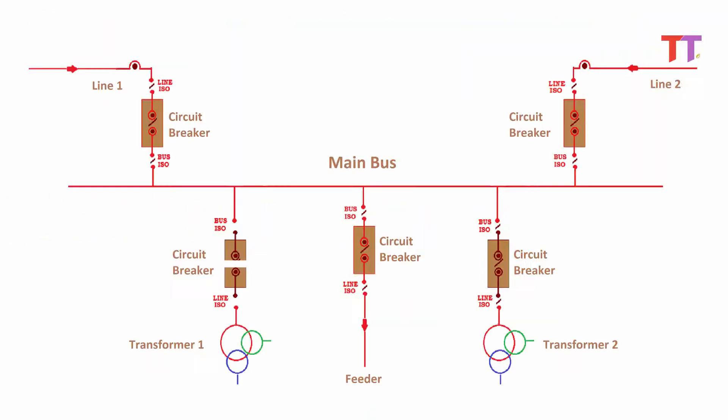Disadvantages: maintenance activity of any bay or equipment such as a transformer is not possible without service interruption of that particular bay or equipment. Also, in case of a fault on the bus or bus maintenance, all the bays connected to the bus get interrupted.